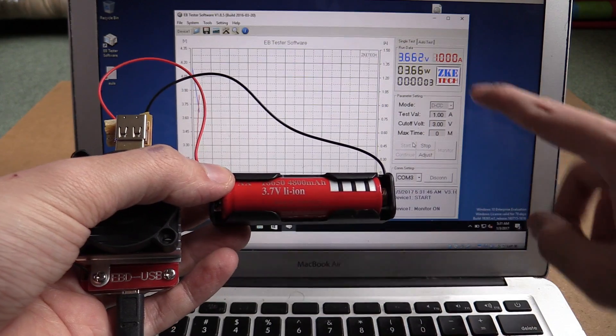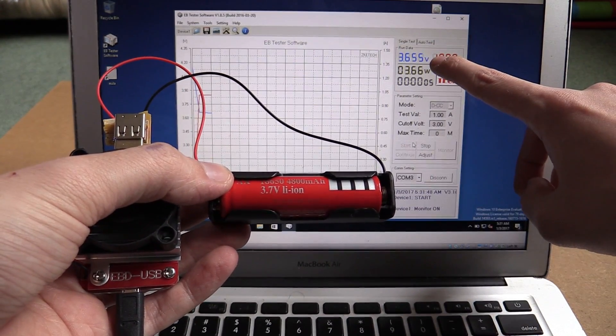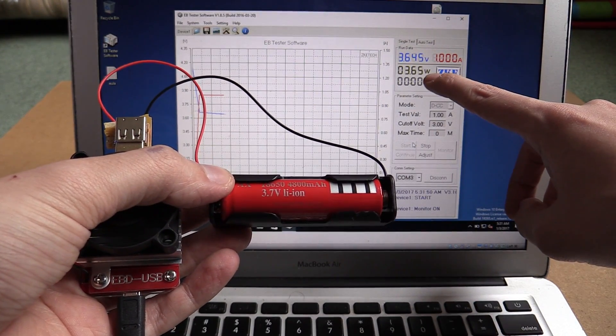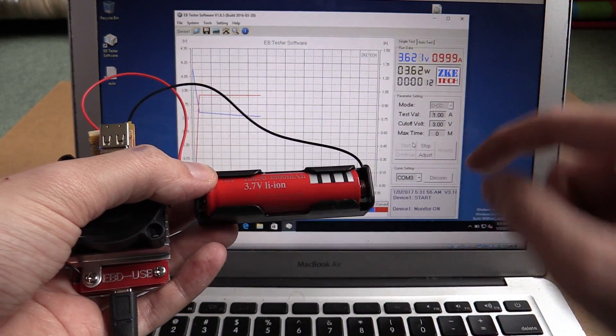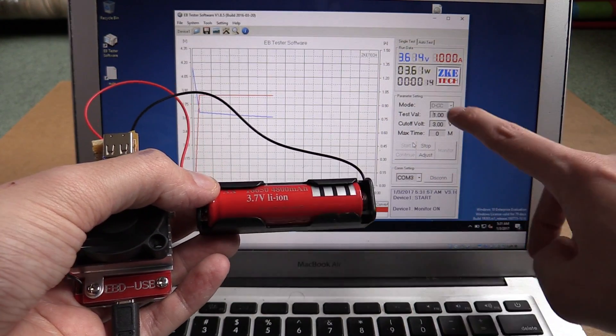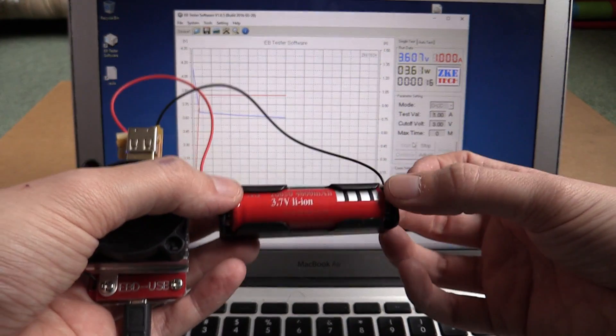So you can see under 1 amp load, the voltage has dropped down to 3.6 volts, and we're consuming around 3.6 watts. So I'll leave this running and show you the results. It's probably going to take a while because at 4,800 mAh and a 1 amp load, this is going to run for quite some time.